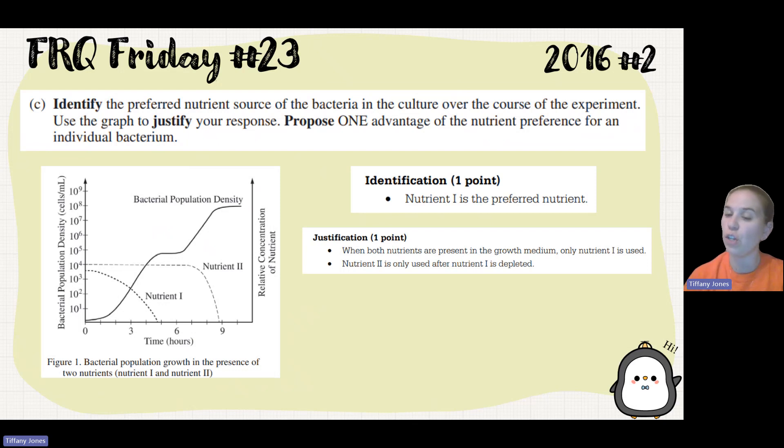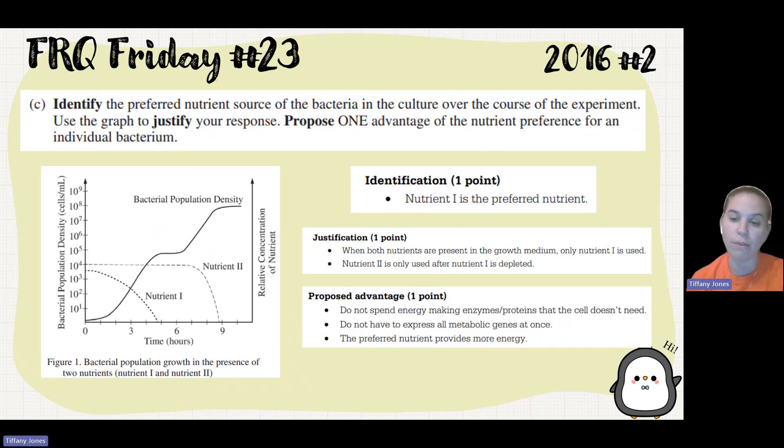Then we have to propose one advantage of the nutrient preference for an individual bacterium. Why would it choose nutrient one over nutrient two? There's a lot of different answers you can come up with. Valid ones are: they don't spend energy making the enzymes, the proteins the cell doesn't need. They do not have to express excess metabolic genes at once. The preferred nutrient provides more energy. Maybe they already have the enzymes, the proteins needed to break it down already present in the cell.